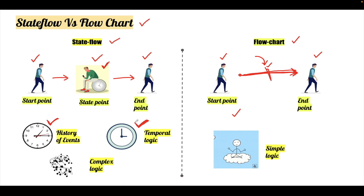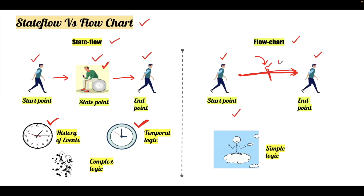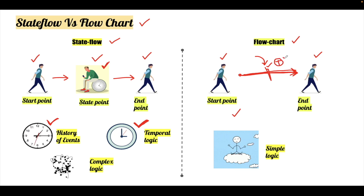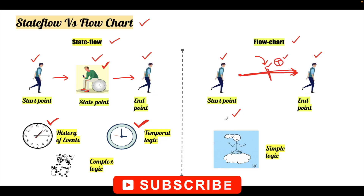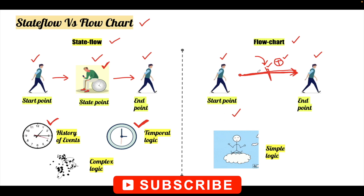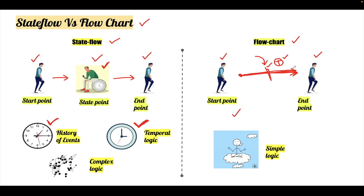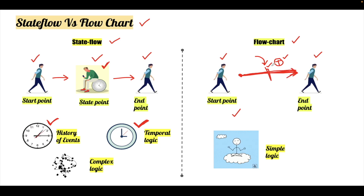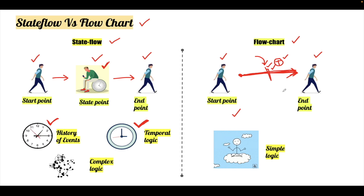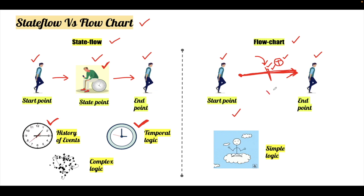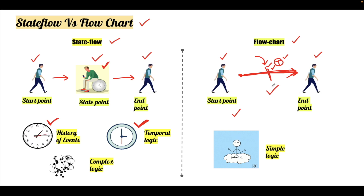Why is temporal logic not implementable in a flow chart? Because there is no time dependency in a flow chart. You cannot define any temporal logic in it because it will not wait for things to happen — it just connects the starting point to the ending point and then executes. If we put a temporal logic in between, it will not complete and it will not exit. So we cannot implement temporal logic in a flow chart.